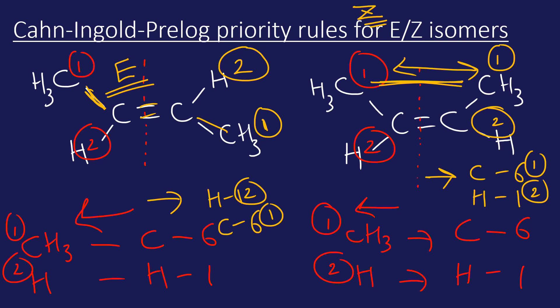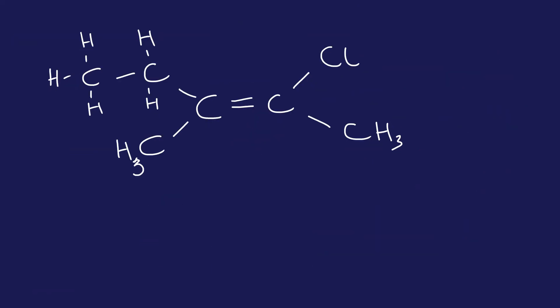So we're assigning priority rules based upon the atomic number. Let's look at a slightly more difficult example. Let's talk through the rules again. Draw that line through the double bond, and let's look at the right-hand side to start with. The right-hand side is fairly straightforward: atomic number six and atomic number 17. Seventeen wins hands down, so number one is at the top, number two is down the bottom. Let's have a look on the left-hand side: atomic number six and atomic number six. Problem—there's a tie.